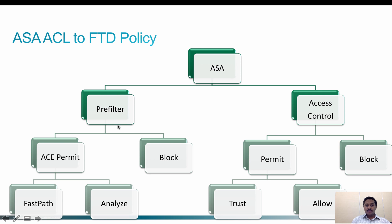All ACEs with permit have two options: they can be migrated as fast path or prefilter analyze. Similarly, if you want to migrate ACLs as an access control policy, ACLs with a deny rule will be migrated as block, and ACLs with permit as an action can be migrated as either trust or allow.